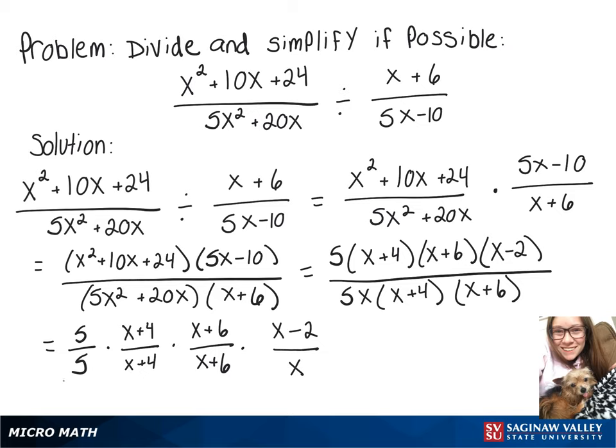Now all this stuff will cancel out and that leaves us with x minus 2 over x.